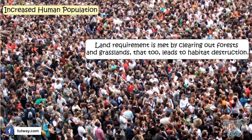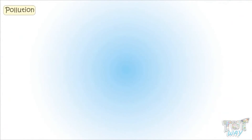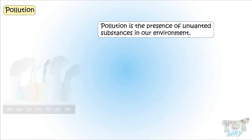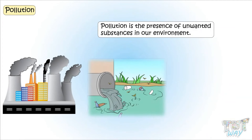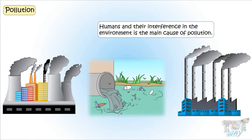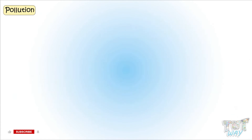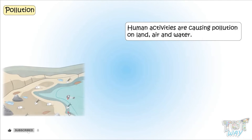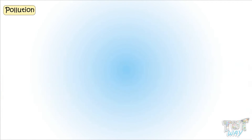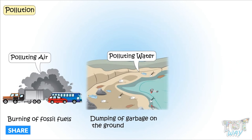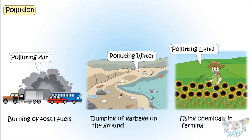Urbanization and increasing population are leading to the loss of habitats. Another reason is pollution. Pollution is the presence of unwanted substances in our environment, and human interference in the environment is the main cause. Human activities are causing pollution on the land, air, and water — burning of fossil fuels, dumping of garbage on the ground, using chemicals in farming — everything is leading to the pollution of air, water, and soil.